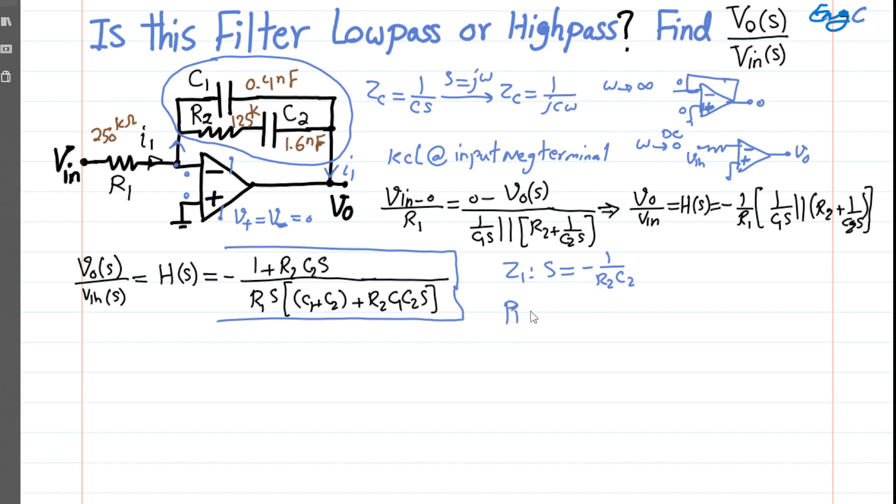And for poles, you can see the first pole is at setting R1·S to zero, so you get S equal to zero. So we have a pole at DC.